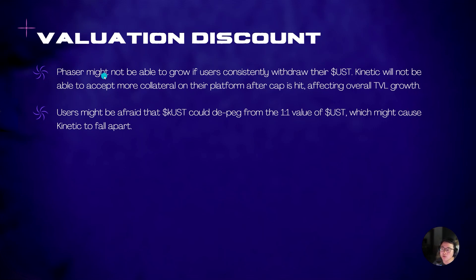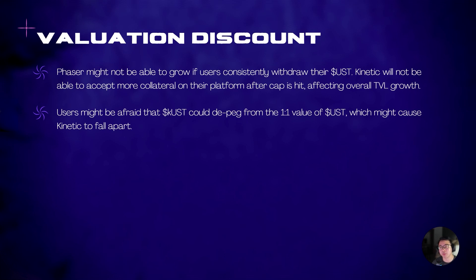Now let's explore the flip side — the valuation discount. Fraser might not be able to grow if users consistently withdraw their UST. Kinetic will not be able to accept more collateral after the cap is hit, affecting overall TVL growth. They need to balance carefully when to increase the cap — increasing it too fast could mean not enough UST in their phaser to repay, which could cause KUST to de-peg, which would be kind of the end of the project. Users might also be afraid that KUST could de-peg from the one-to-one ratio of UST, which might cause Kinetic to fall apart. However, this scenario is possible but not very probable as long as they maintain the cap well.